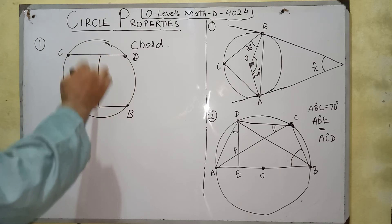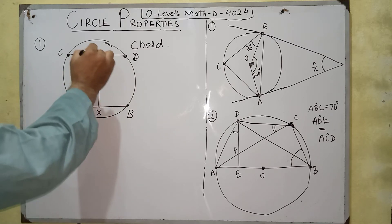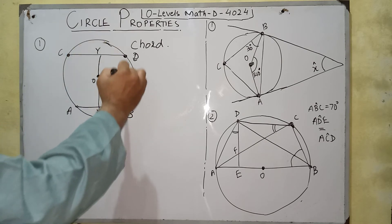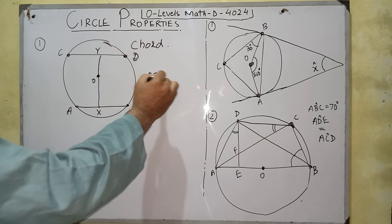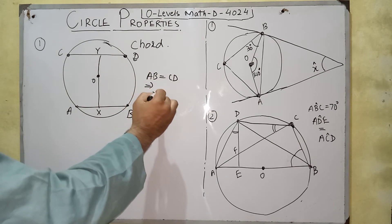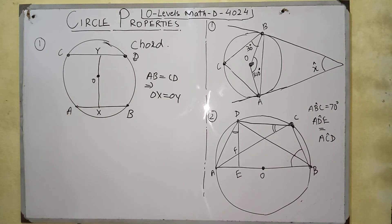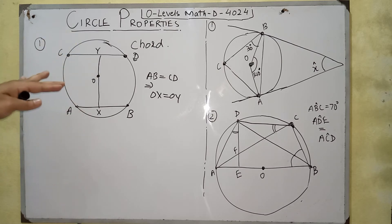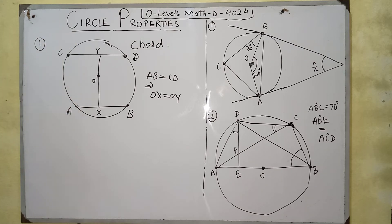Let's say the foot of the perpendicular from center O to chord AB is point X, and to chord CD is point Y. If AB equals CD, then OX equals OY. Similarly, if two chords are equidistant from the center of the circle, then both chords are equal.